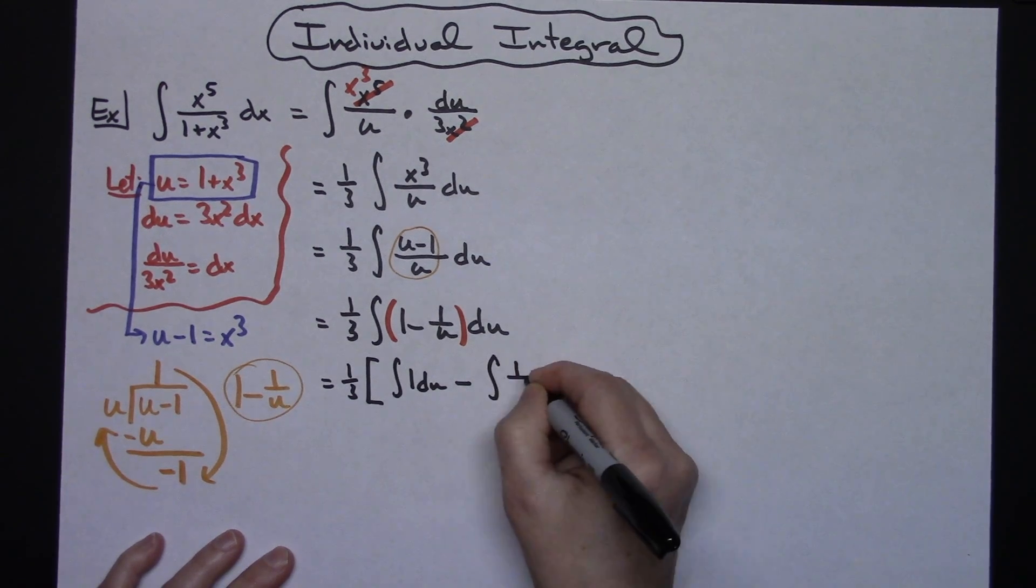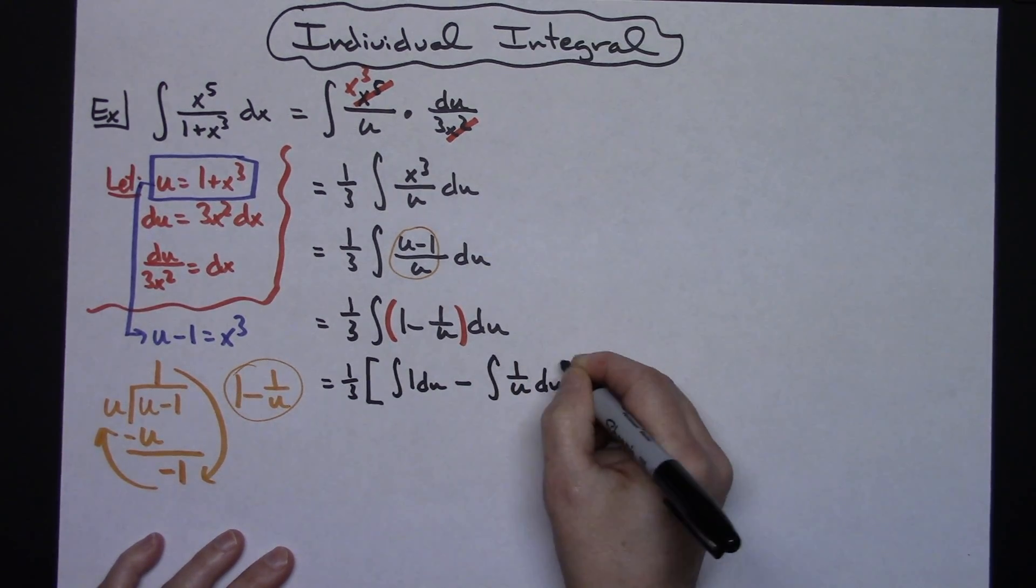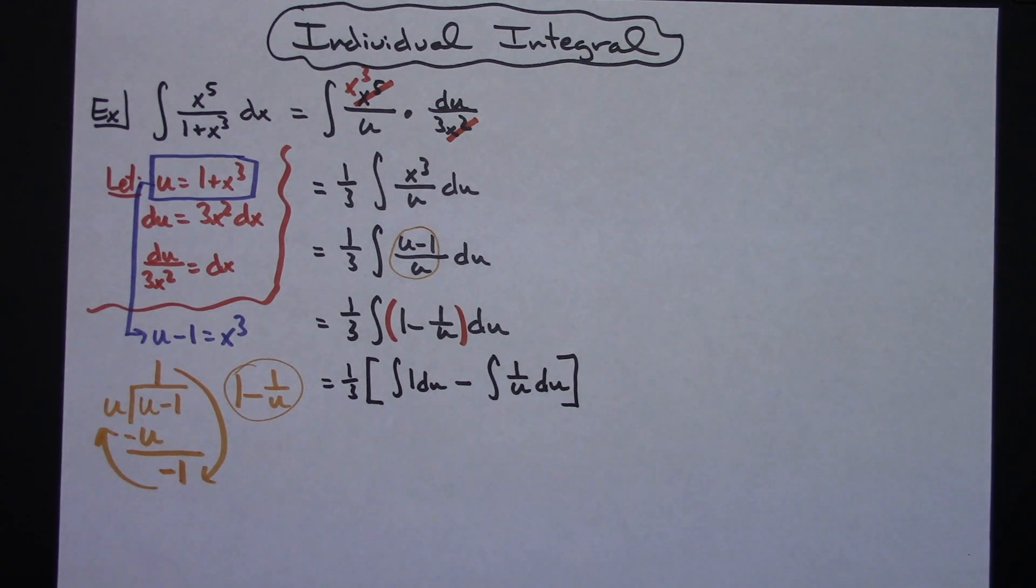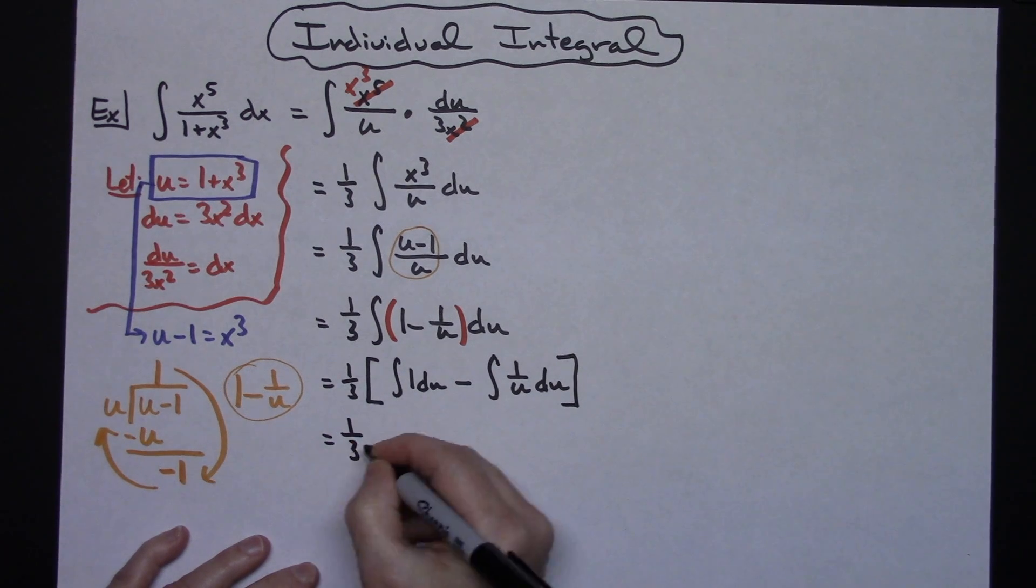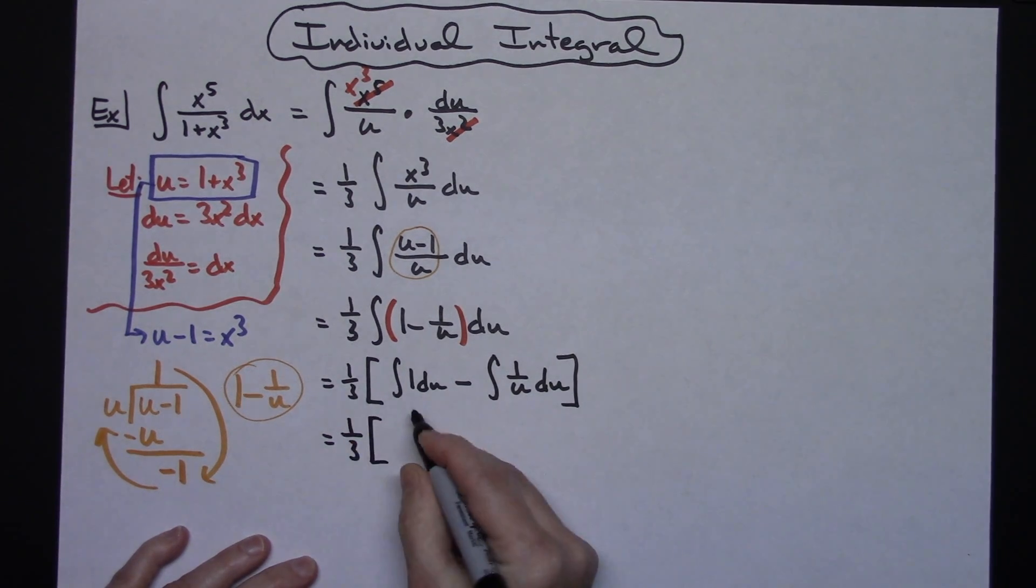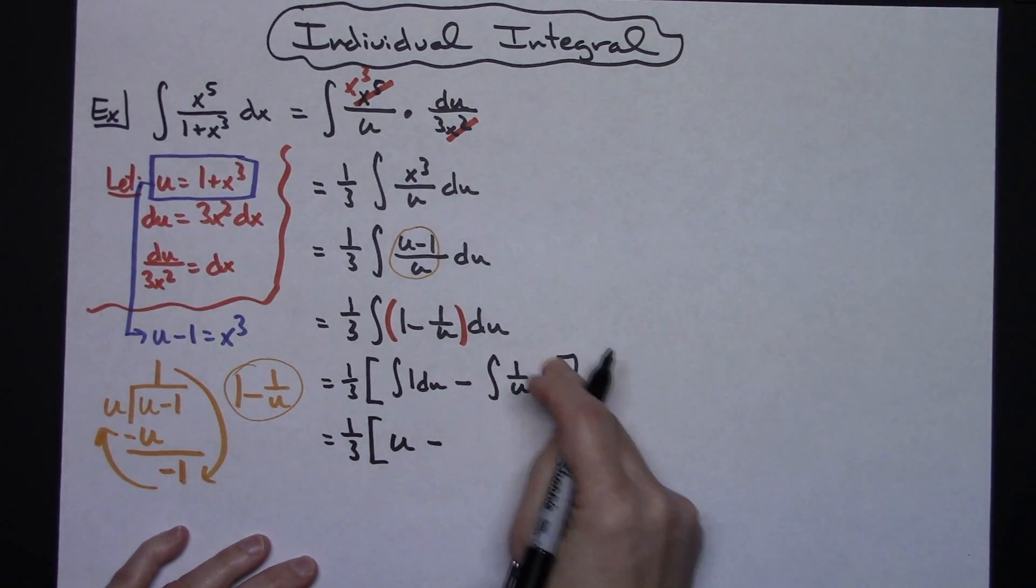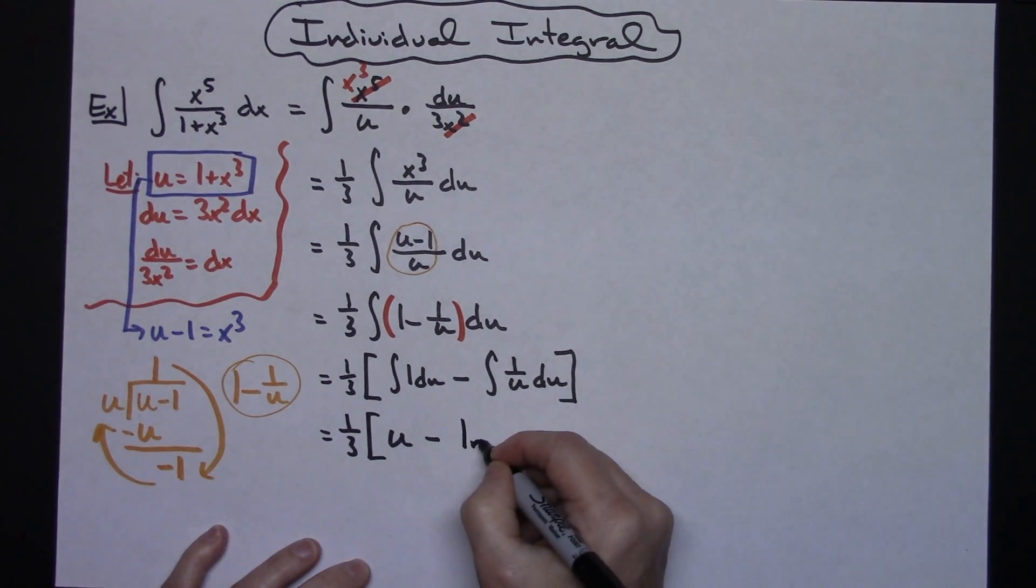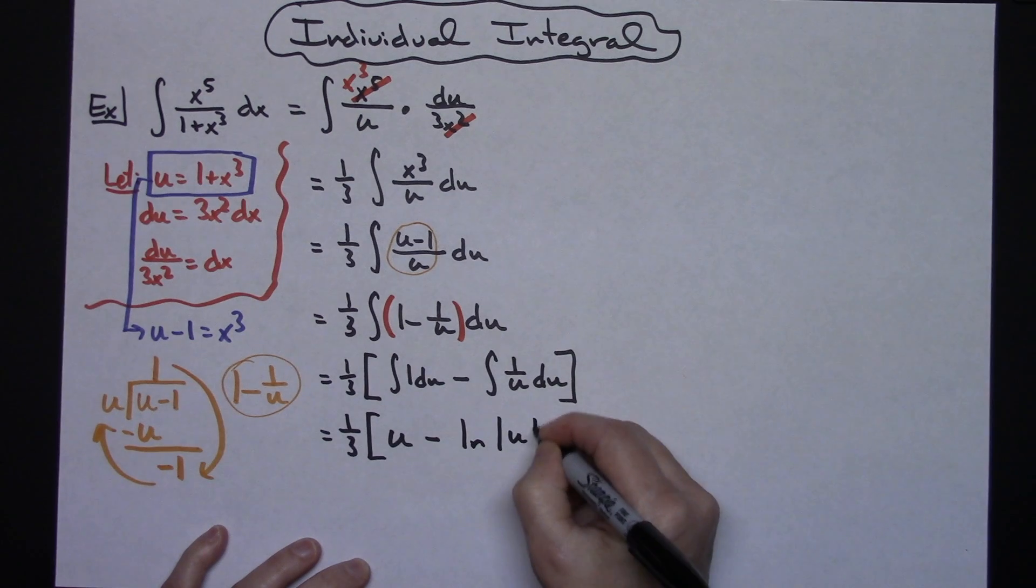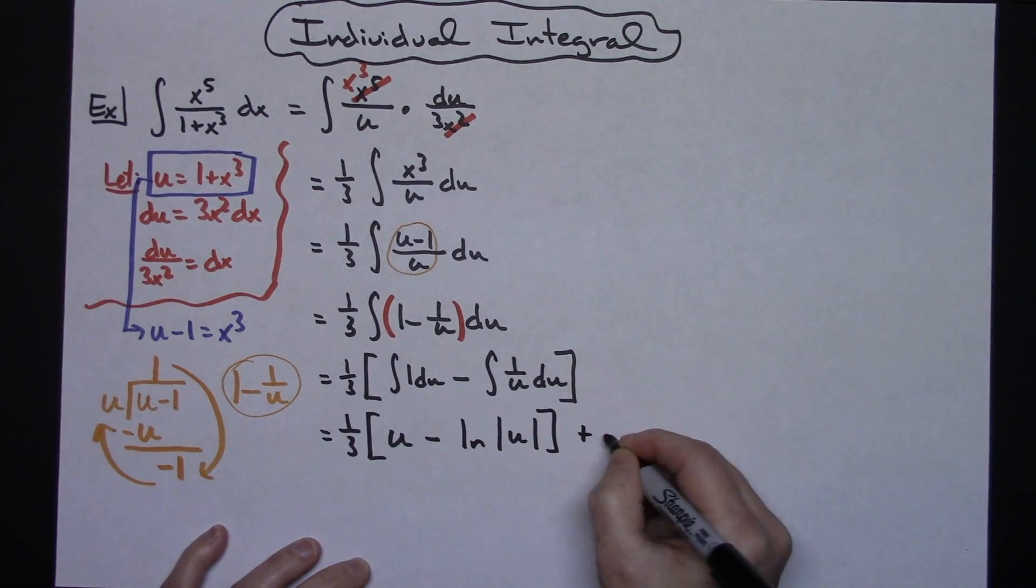The only reason I did that is just so we can look at those two a little more individually. That 1/3 is going to stay out in front. Integrating 1 there with respect to u is just going to give me a nice little u. Hopefully at this point, if you're doing this type of integral problem, hopefully you have this memorized. If you integrate 1 over u du you're going to have natural log absolute value of u, and then I'll have a plus c there because I've finished integrating.